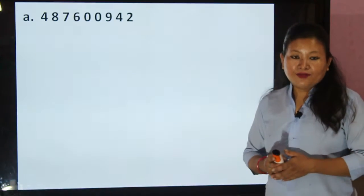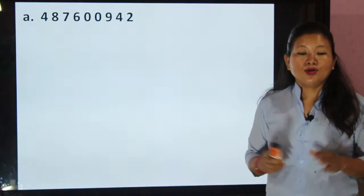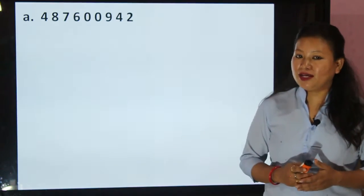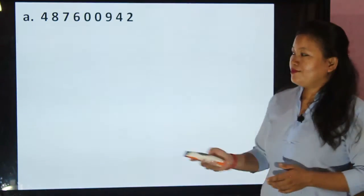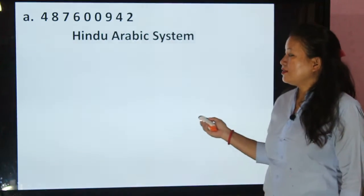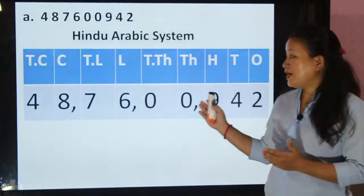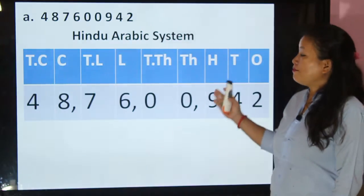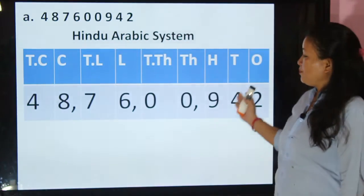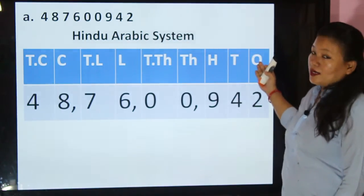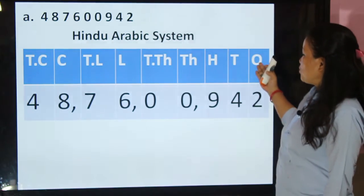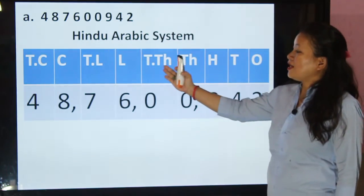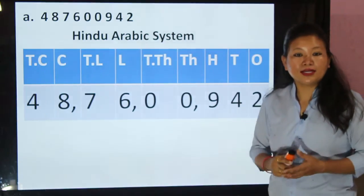Here is a nine-digit number. First, let's write it according to the Hindu Arabic system. We make the place value table and write the names of the place values: ones, tens, hundreds, thousands, ten thousands, lakhs, ten lakhs, crores, and ten crores.